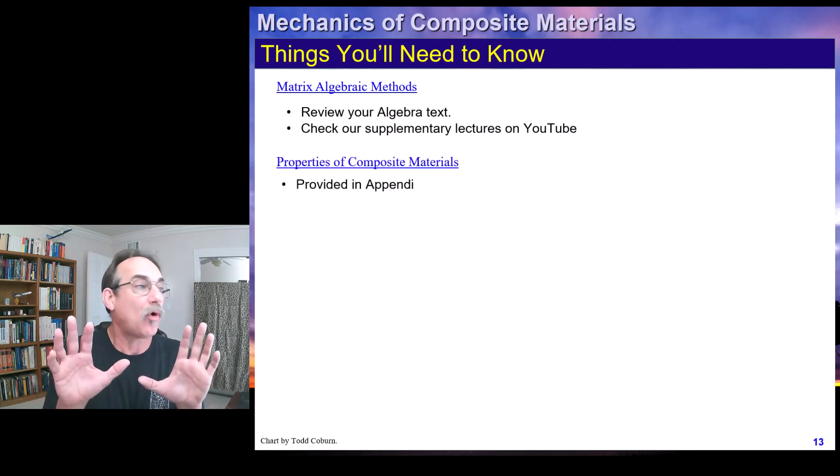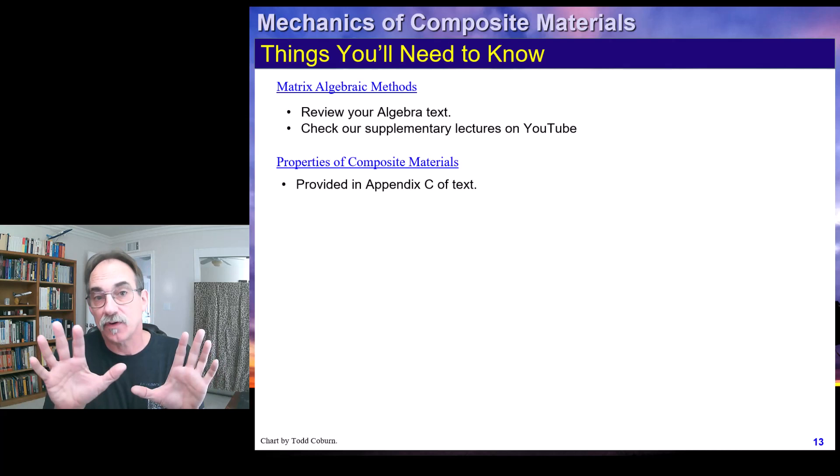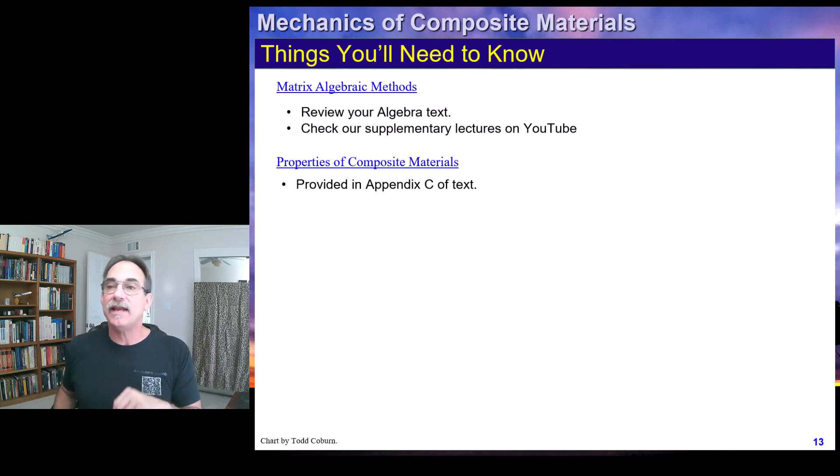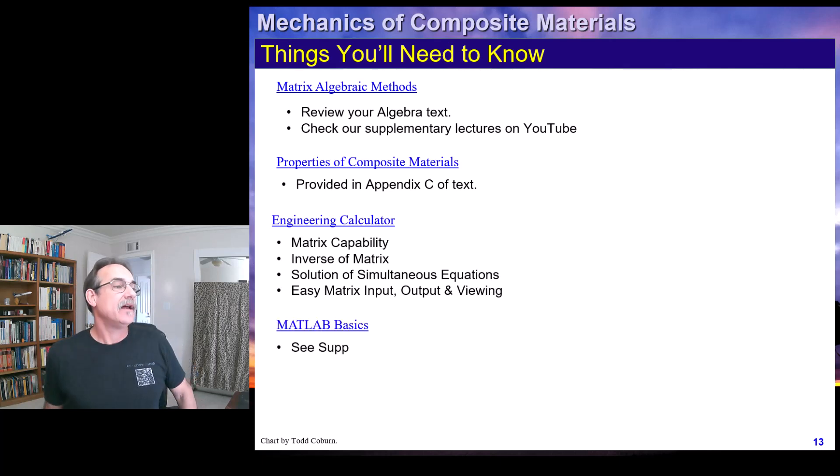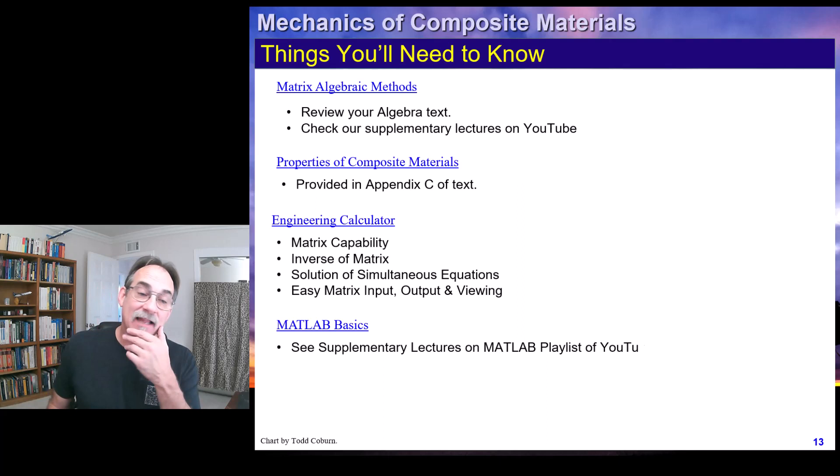Okay. We're also going to need the properties of composite materials. For these we can go back to our appendix. Appendix C has all these and we'll look at that next class. We're going to need our engineering calculator. We talked about that. This is the capability you're going to need.